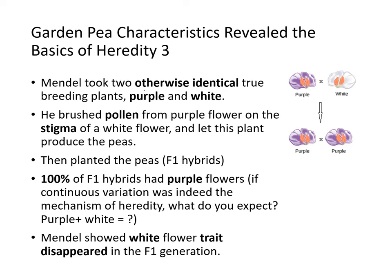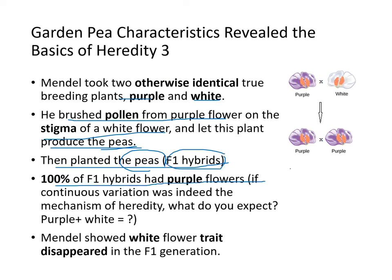He was lucky enough to choose traits and characteristics where one gene was solely responsible for one characteristic — he got lucky in that. He took otherwise identical true breeding plants — purple and white — brushed pollen from the purple flower onto the stigma of the white flower, and let the plant produce peas. This is the F1 hybrids — 100% of F1 hybrids had purple flowers. If continuous variation were the mechanism, you'd expect something pinkish, but the white flower trait disappeared in the F1 generation.